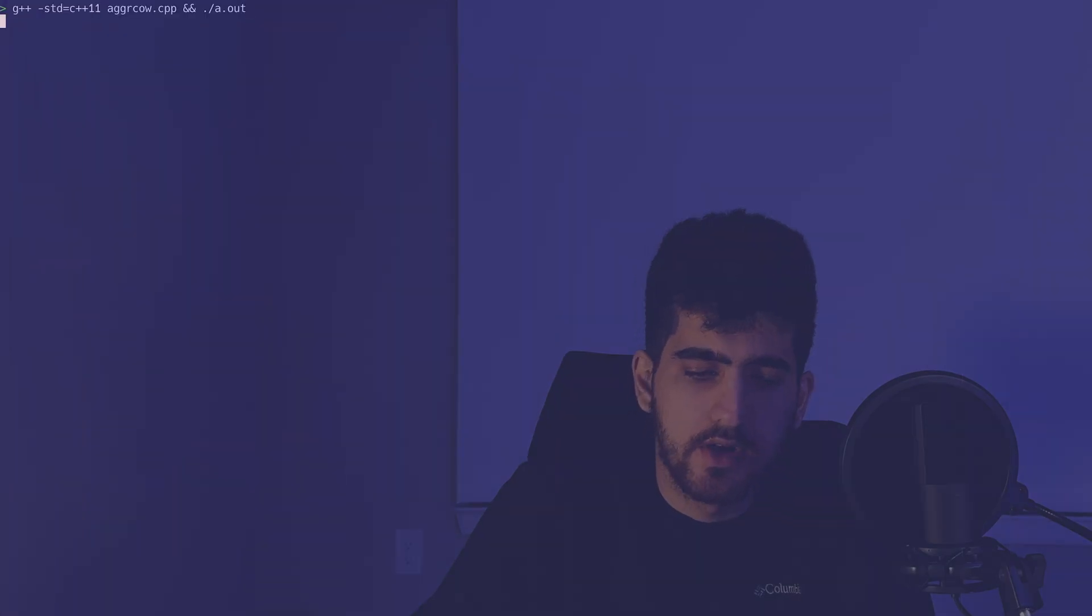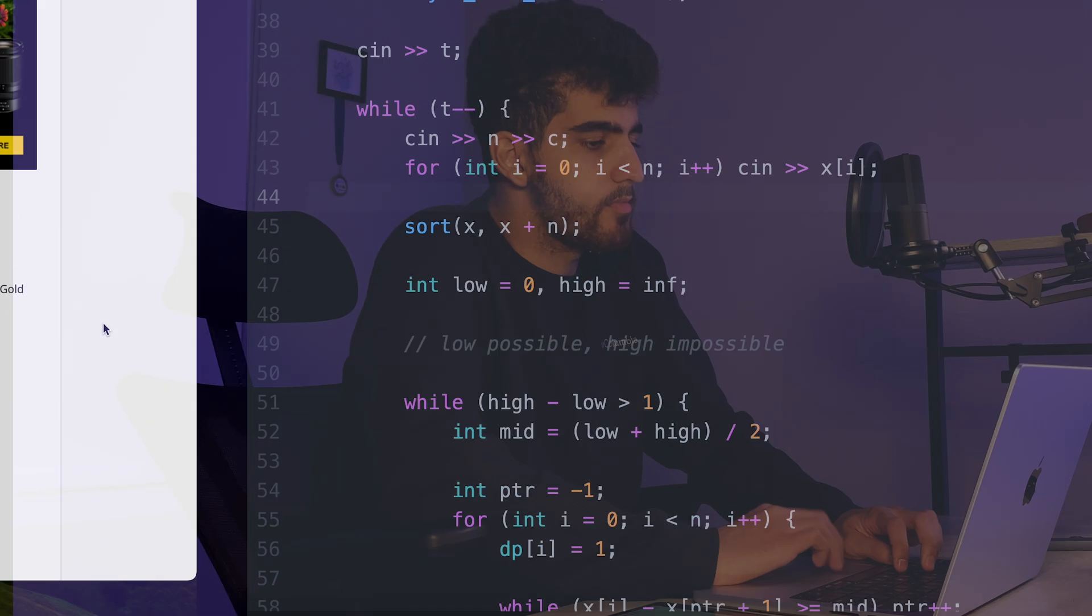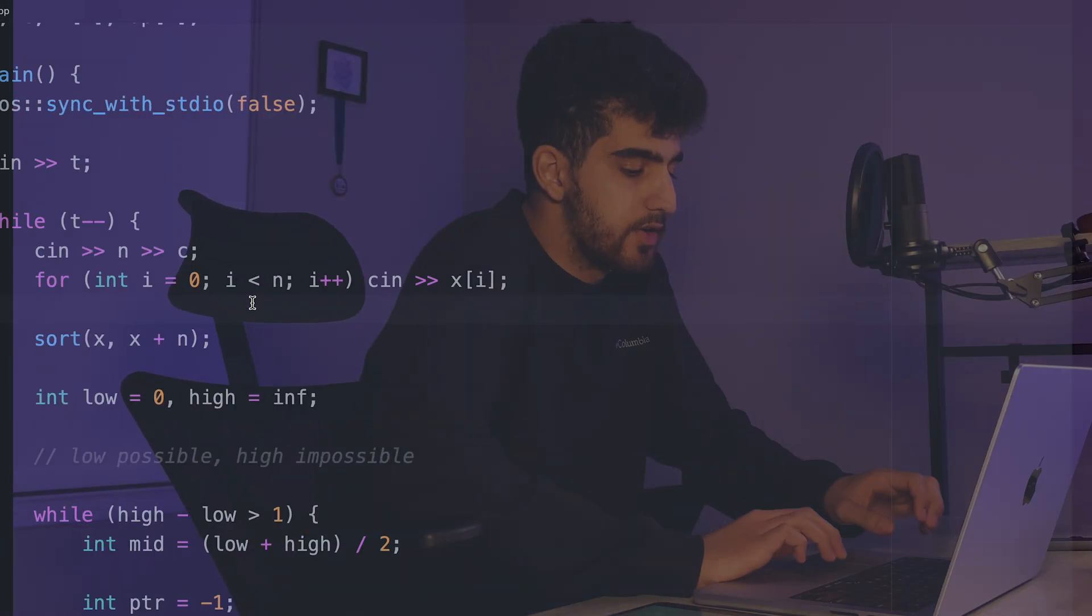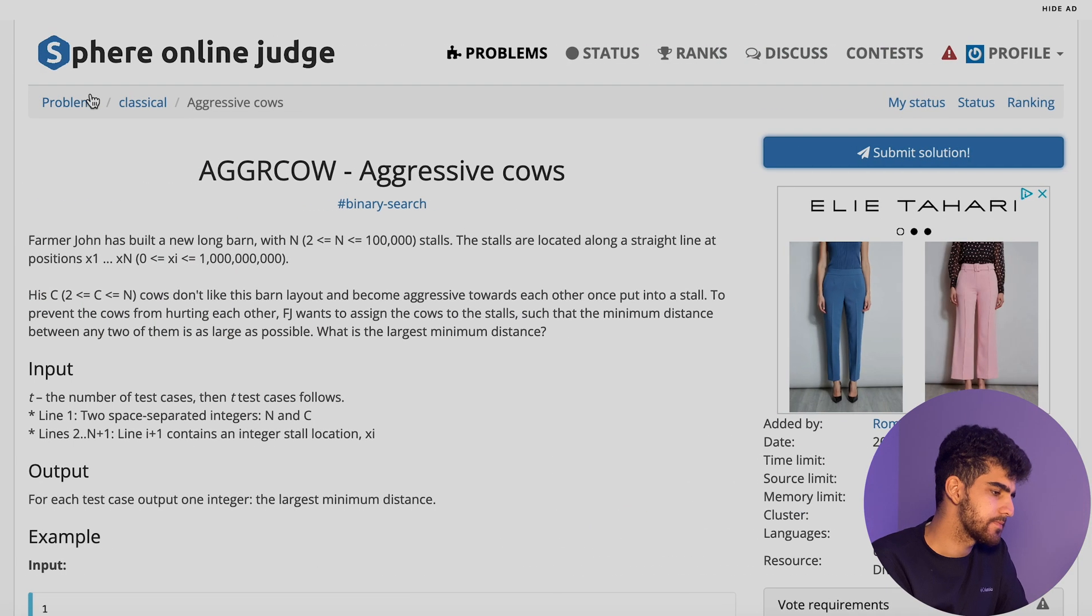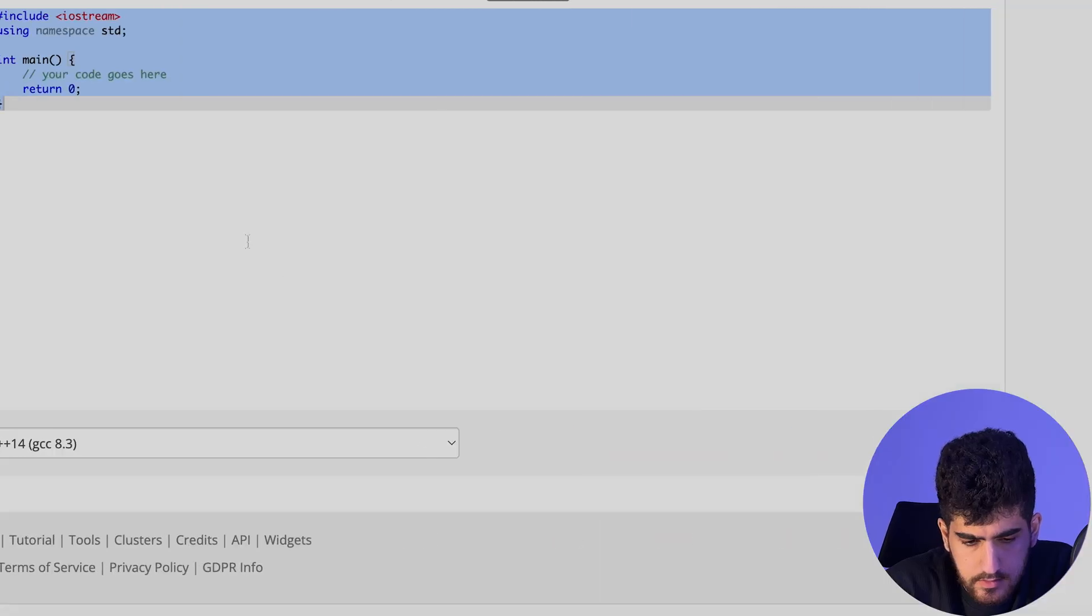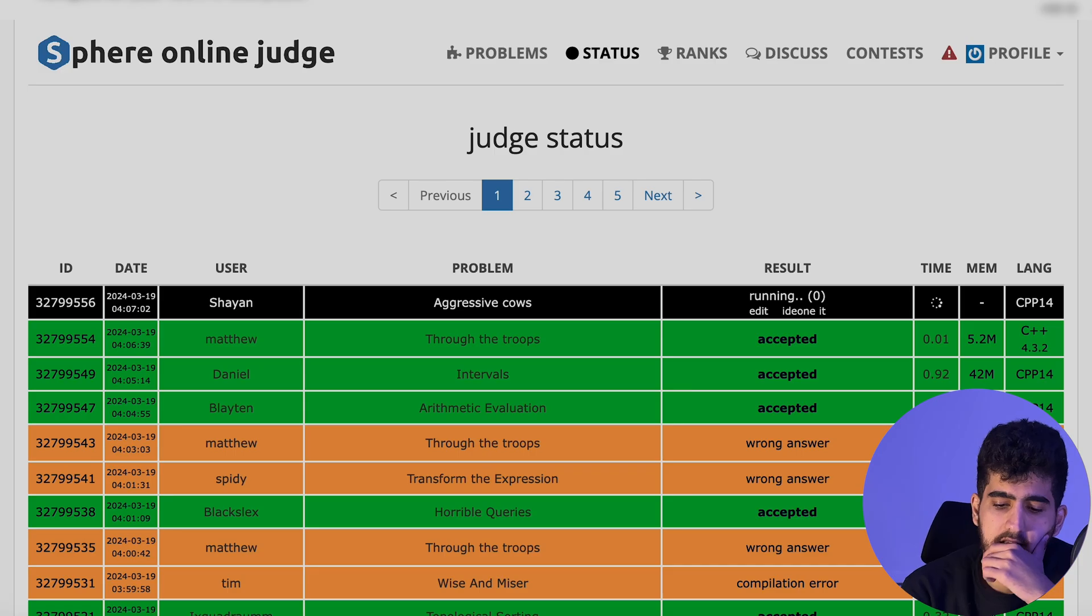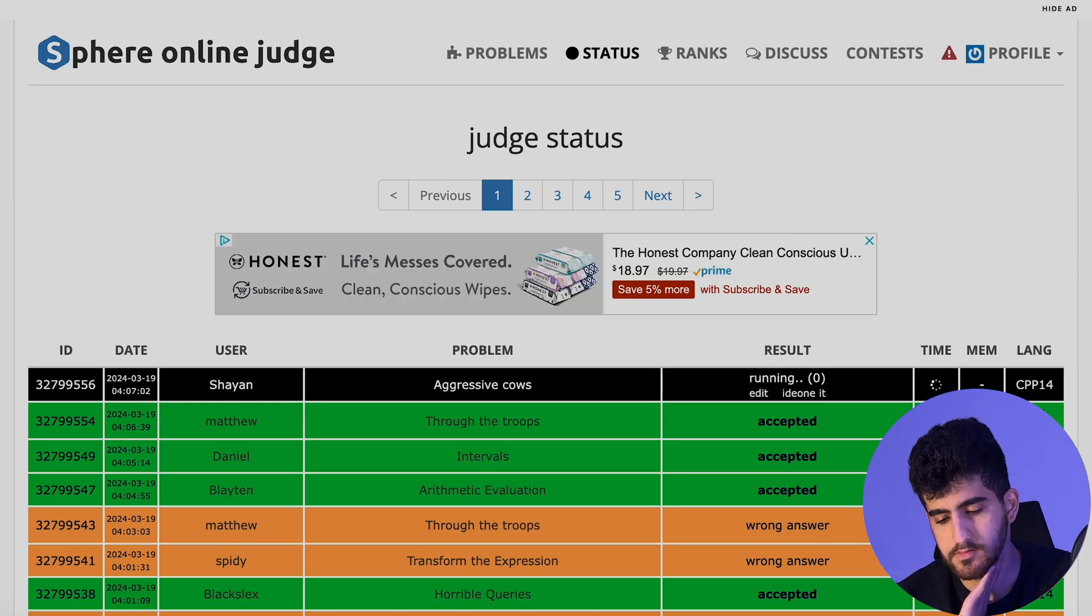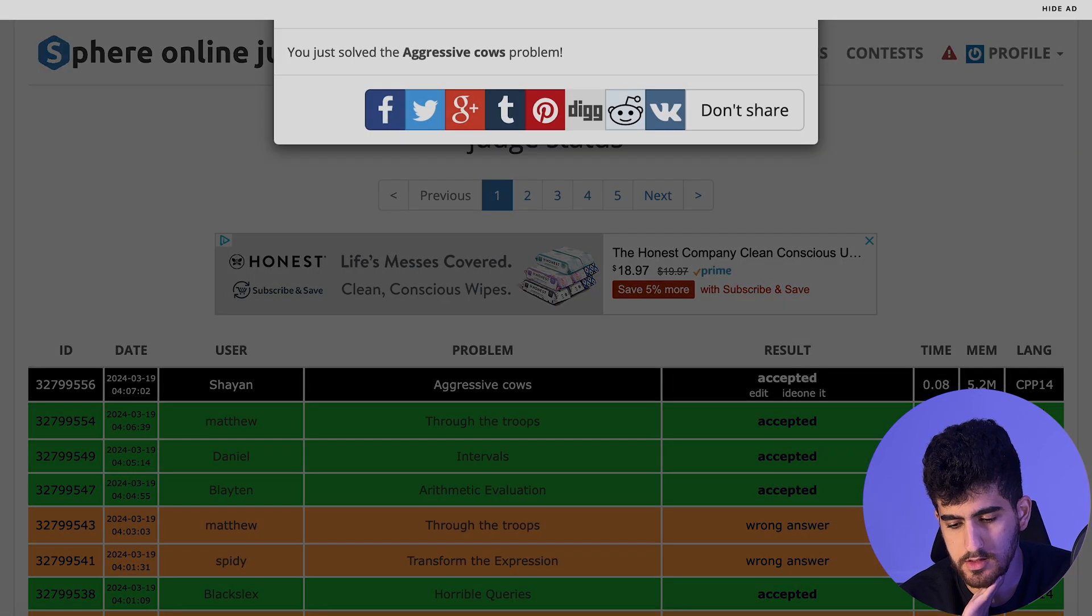Now let's run this code. It's giving us three which is correct. Let's submit it. And see what happens. Accepted. So that was all. See you in the next video. Shaya.